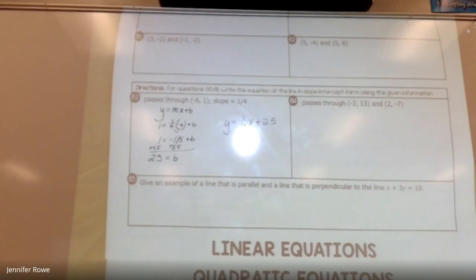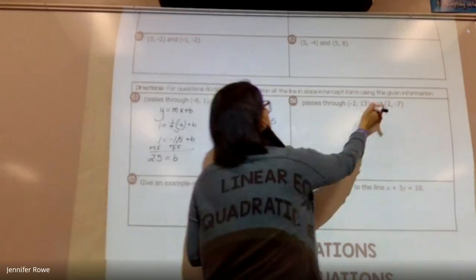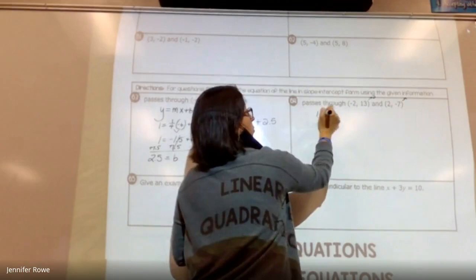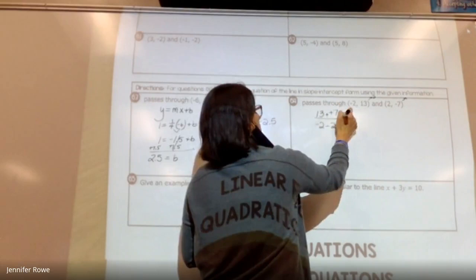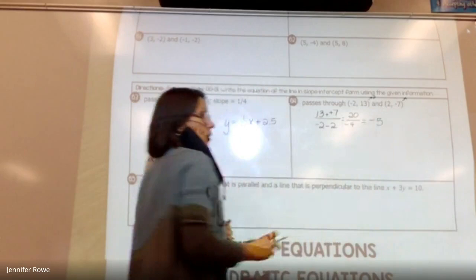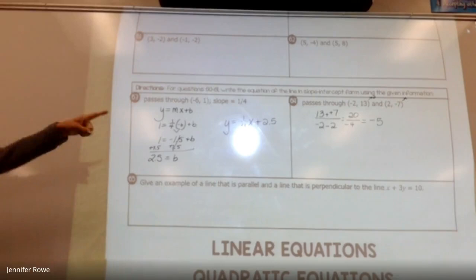Now I need to go back and I need to write the equation. So Y equals what? One-fourth X plus two and a half. Perfect. Could you write X over four? You could write X over four. You could write 0.25X if you're not graphing it. All of those are the same. Number 64, you have to find the slope first. They didn't hand you the slope itself. So I'll do it real quick.